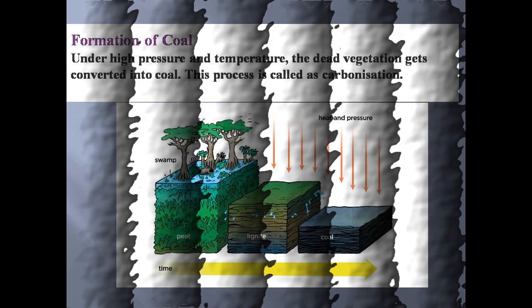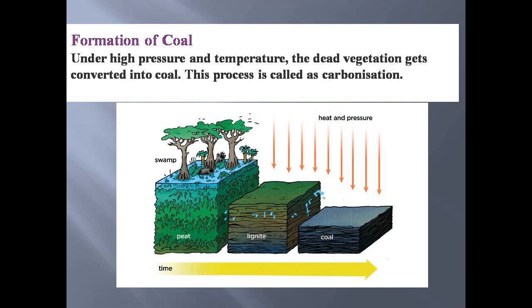Coal was formed when huge forest areas got buried under the surface of the earth. Under hot and humid conditions, they were attacked by anaerobic bacteria which removed hydrogen and oxygen, leaving behind carbon. Due to very high temperature and pressure of the earth, the carbon got compacted to form stony residues known as coal.